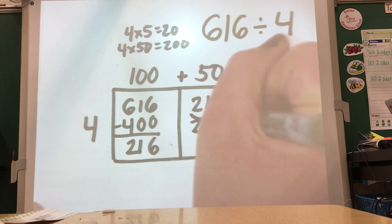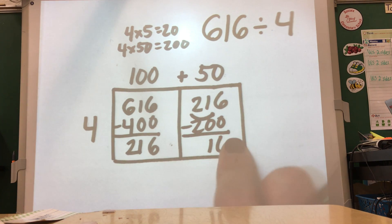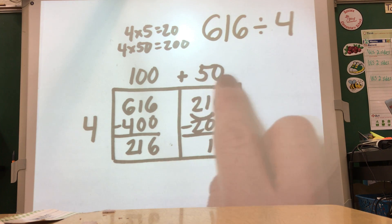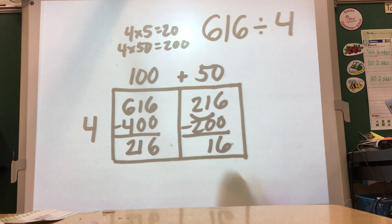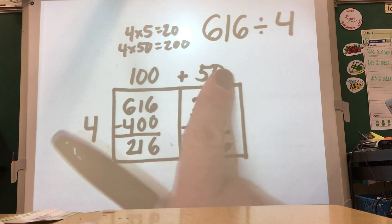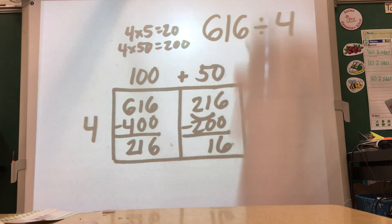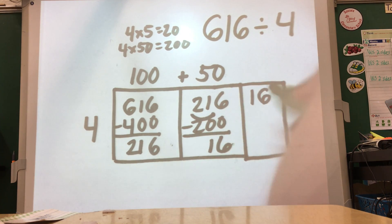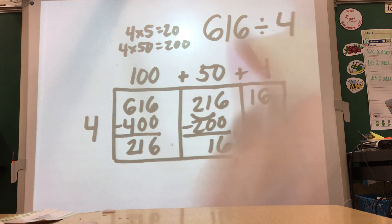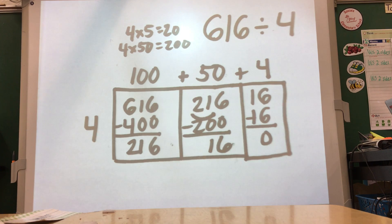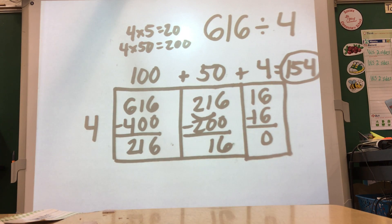We know that four times 50 gives us 200, so that's what we're going to subtract, and we're left with 16. This involves students using number sense and estimation to find a number close to 216 when multiplied by four. There's not one correct way to solve the area model — students might use four times 40 is 160 and go from there. Now I need to extend my area model because I have 16 left. Four times four gives me 16, subtract, and I'm down to zero. So 100 plus 50 plus 4 equals 154. We won't always end in zero — if we don't, that means there's a remainder, but we haven't learned those yet.